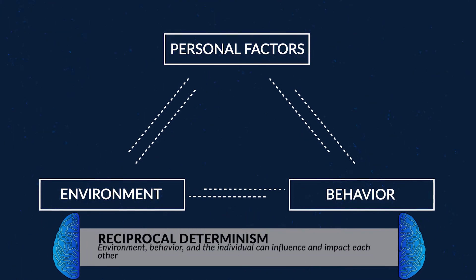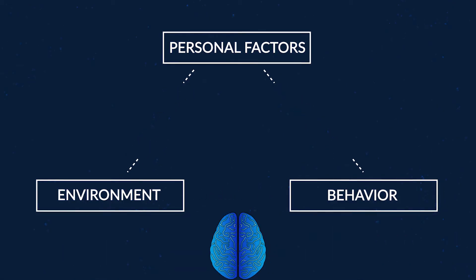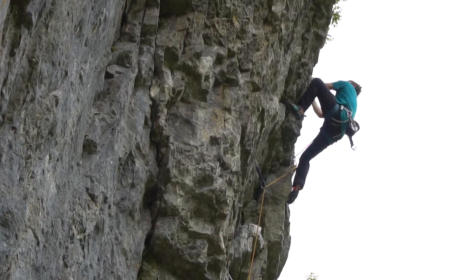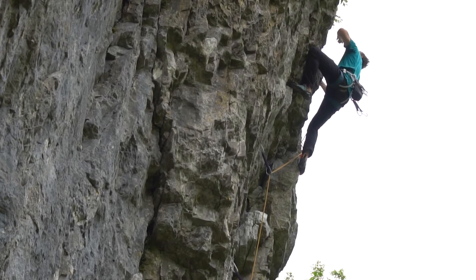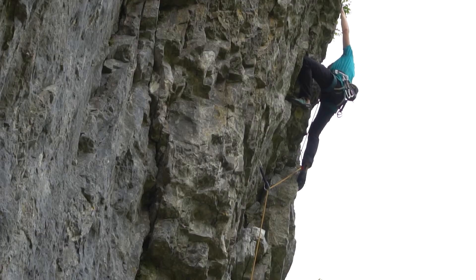Reciprocal determinism looks at an individual's environment, behavior, and feelings and beliefs, and how they are influencing and impacting one another. For example, say you are a risk-taker and you enjoy doing challenging tasks. That risk-taking behavior will lead you to try different sports or activities that are more risky or physical, like rock climbing. Your behaviors are then impacting your environment as you put yourself in more challenging environments where you might meet others with similar behaviors. As you talk and get to know other people, they'll start to influence your thoughts and beliefs. You can see how all these different factors can influence one another.